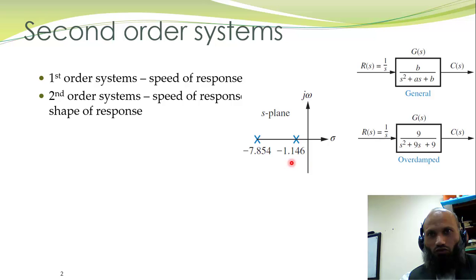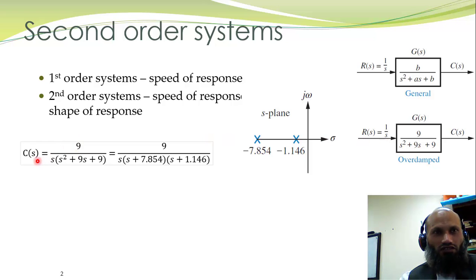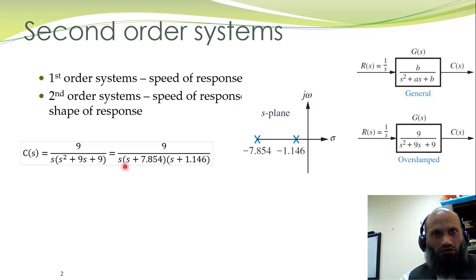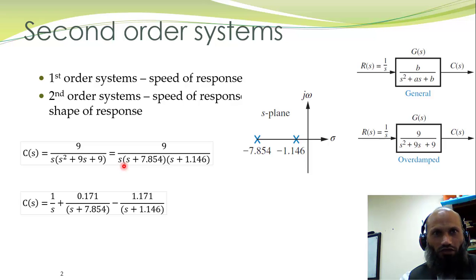These poles are shown in the pole-zero map. For a step input, the response in the Laplace domain is given by 9 over s times (s squared plus 9s plus 9). The transfer function multiplied by the Laplace transform of the input, which is 1 over s, gives the output. We can factorize the denominator polynomial and to find the time domain behavior we need to take the inverse Laplace transform using partial fraction expansion.